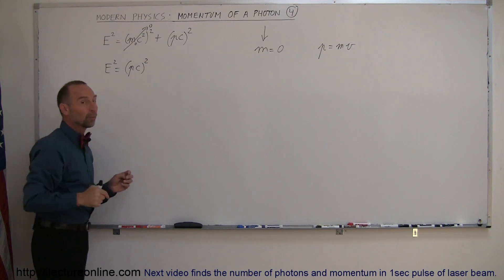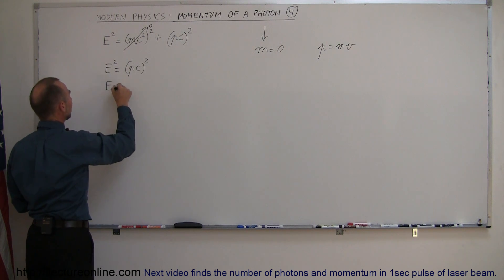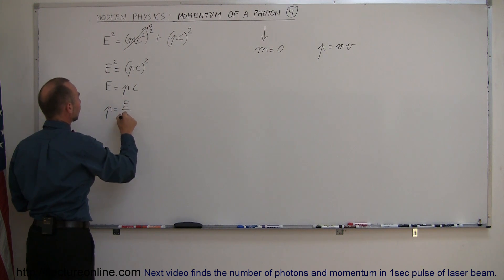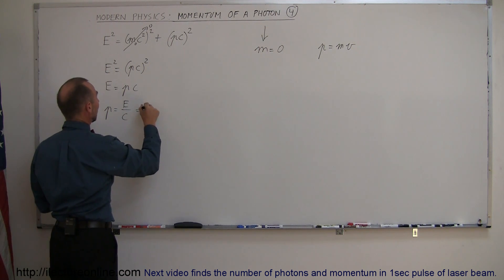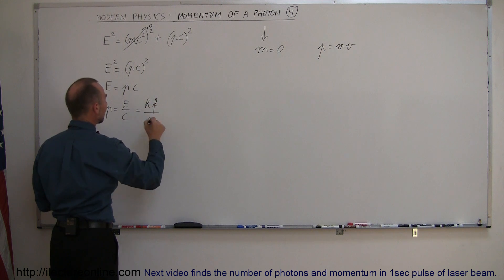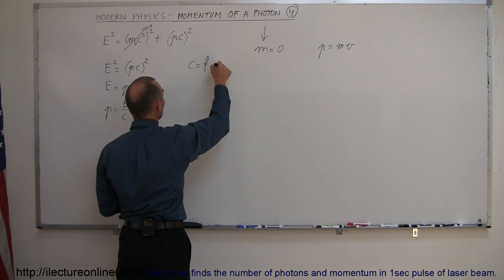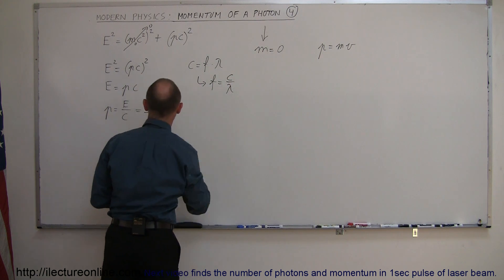If we solve this equation for momentum, we take the square root of both sides and get E is equal to P times C. Therefore, the momentum is equal to the energy of the particle divided by the speed of light. For a photon, the energy is equal to Planck's constant H times the frequency, divided by C. And remember that for a photon, the speed of light is equal to the frequency times the wavelength, so the frequency can be expressed as C over lambda.